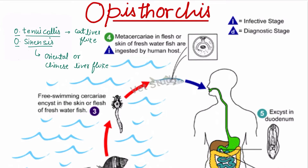Hey, welcome to YouTube. I am Aniket and you are watching Vetstudy. Today we will discuss about the parasite Opisthorchus. This parasite comes under the family Opisthorchidae and this fluke mainly affects the bile duct and gallbladder of vertebrates.